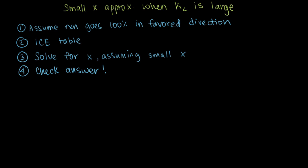In this video, we're going to be talking about using the small x approximation to solve equilibrium problems when Kc is large — and by large, I mean Kc is greater than or approximately equal to 10 to the fourth. We have another video that talks about using the small x approximation for when Kc is small, and that's probably a simpler place to start if this is the first time you're seeing it.